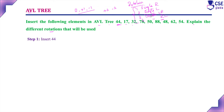First step: insert 44. This is the first node we are inserting. If you check the balance factor, it is 0 — there is no left child and no right child. So the balance factor is 0.